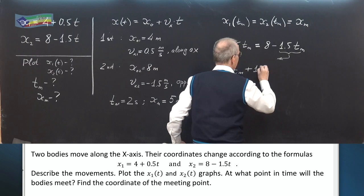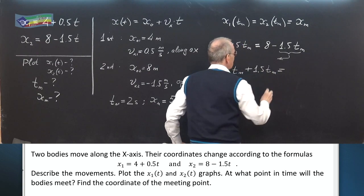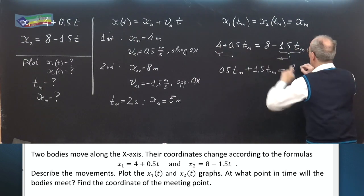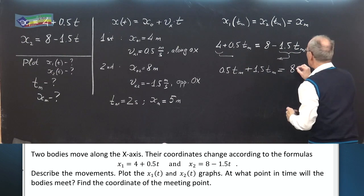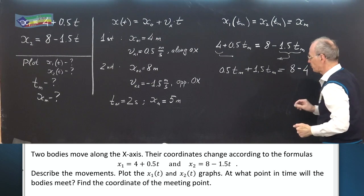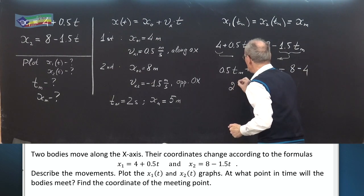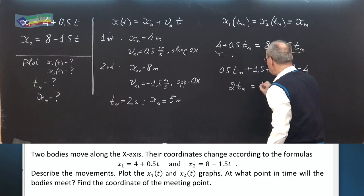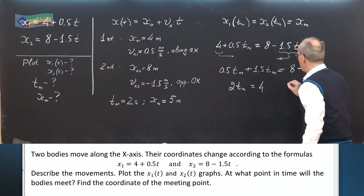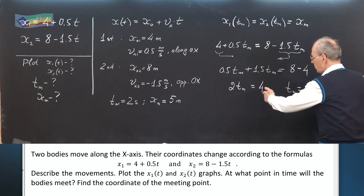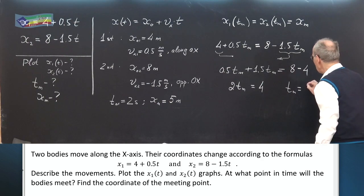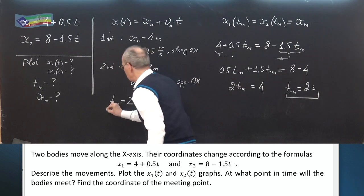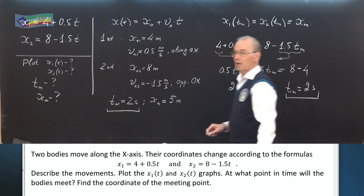And we'll have 0.5 tₘ plus, this minus converts into plus, 1.5 tₘ equals 8. Here plus after movement minus 4, or 2 tₘ equals 4, or tₘ equals 4 divided by 2, 2 seconds. The same result as when using graphical method.